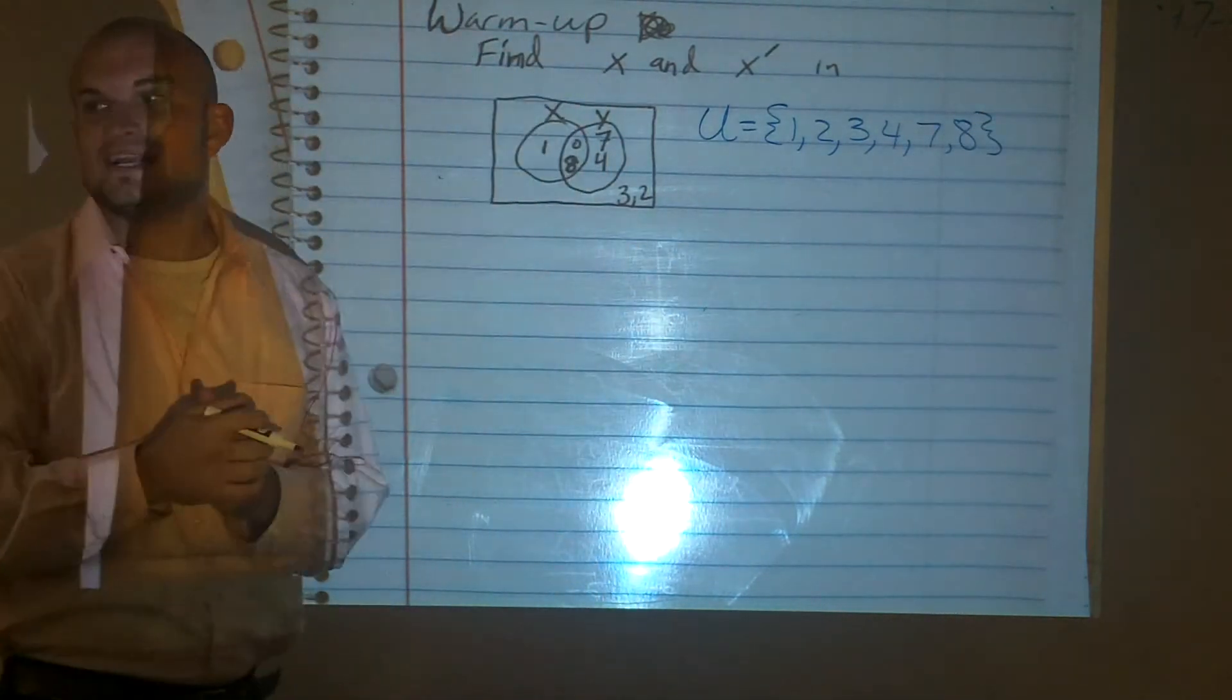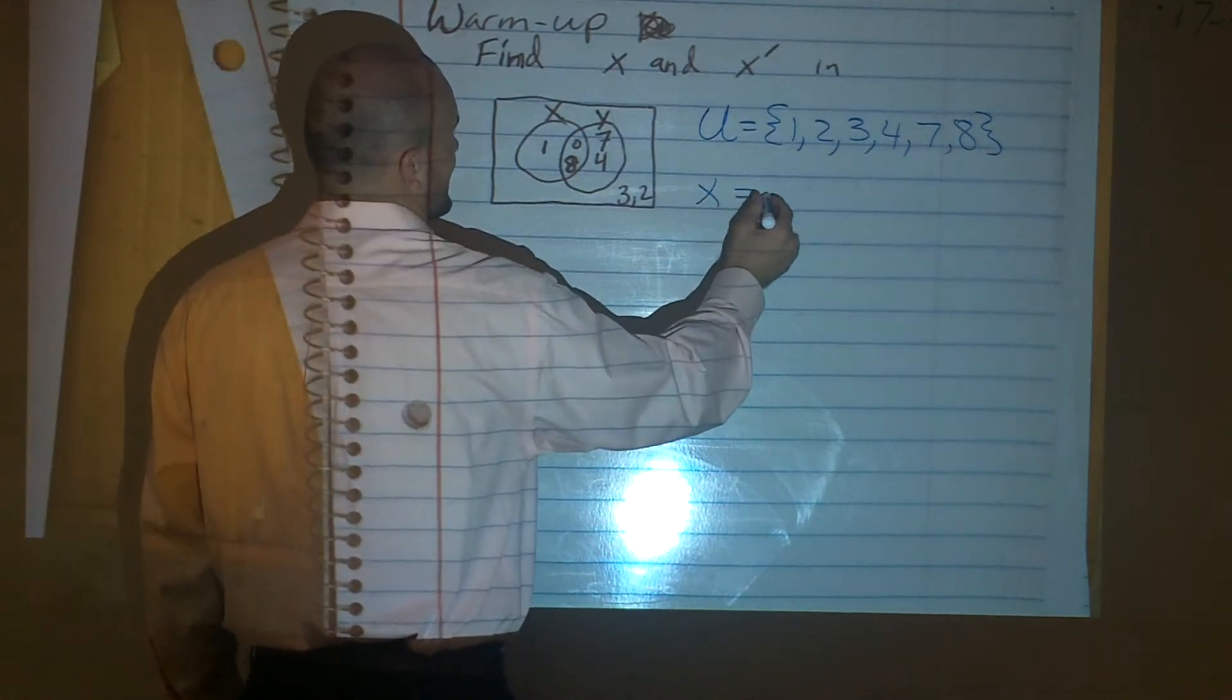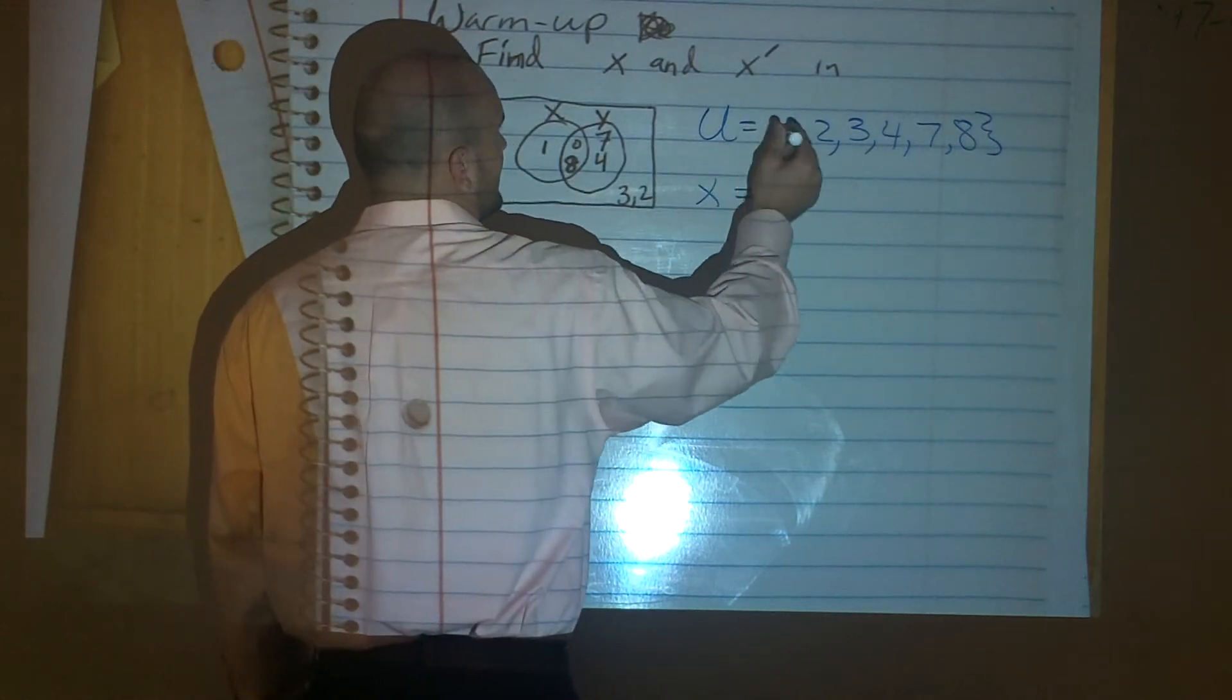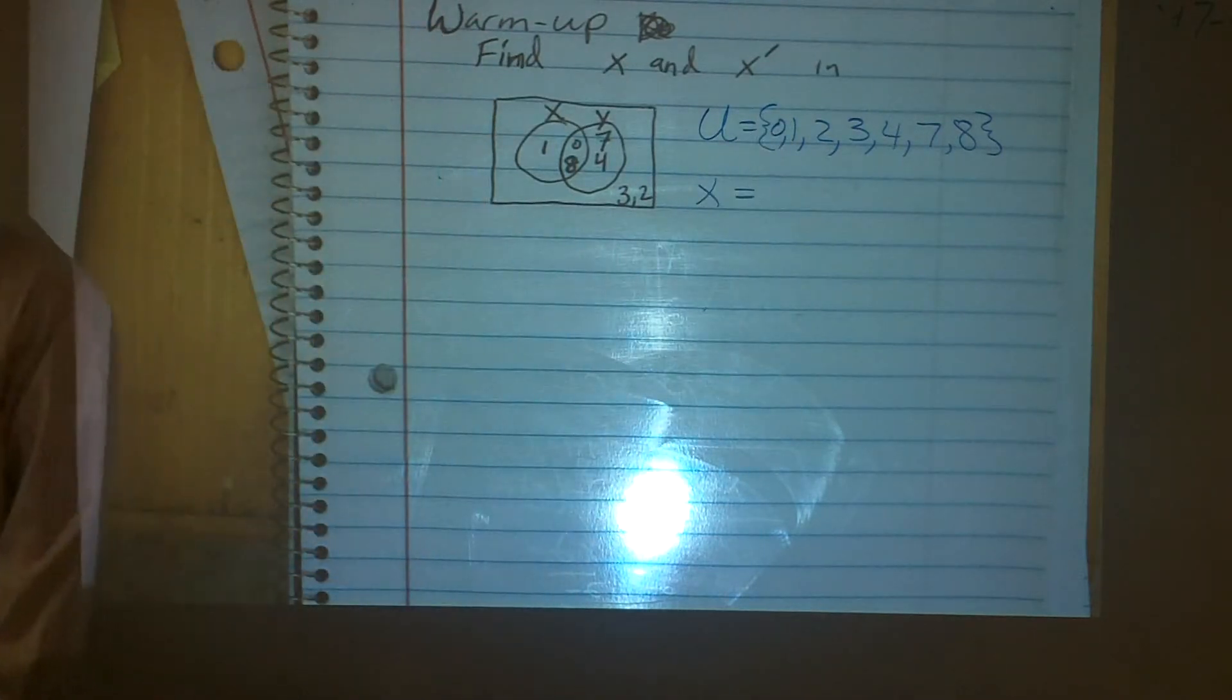All right, then the next thing I say is find x. So my x is going to be, oh, I'm sorry, that's a 0 inside of there as well, right? Nobody corrected me on that. There you go. So we have a 0 as well in there.